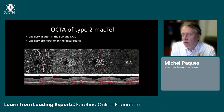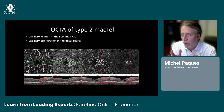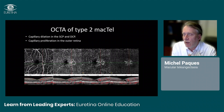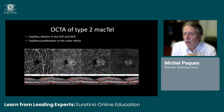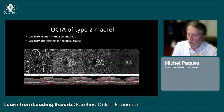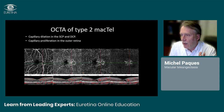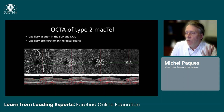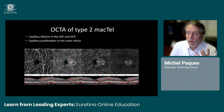OCTA also gives information about the vasculature, showing a typical image of what seems like a retraction or agglomeration of vessels on the temporal side of the fovea. This is rather typical of type 2 Mac-Tel and is why it was initially diagnosed before the OCT era as macular telangiectasis, because vascular abnormalities are prominent in that disease.